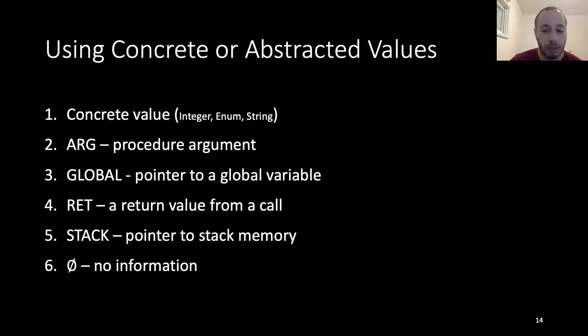Keeping in mind that we want a compact representation, we will augment the call sites by using concrete or abstracted values. When a concrete value is available, for example integer, an enum, or a string, we will use that. In other cases, we will use four abstractions, which provide some information about the value being passed as an argument. In our case, we have four abstractions: arg marking procedure argument, global marking a pointer to a global variable, ret marking a return value from another procedure call, and stack marking a pointer to a stack memory, which usually hints that this is a local variable. We also add the no information abstraction for cases in which we don't have information about the value.